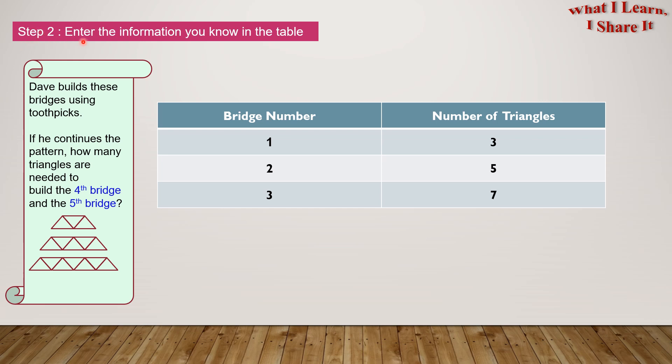Step 2: Enter the information you know in the table. So we know that he has 3 bridges: bridge number 1, bridge number 2, and bridge number 3. And then we know the number of triangles, which we can count in here.